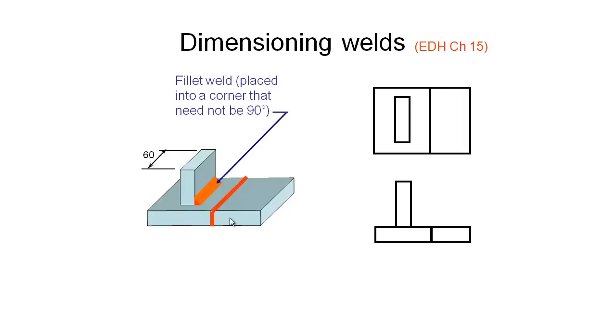The first weld we're going to look at is this fillet weld, a triangular shaped weld placed into this corner. This one's at 90 degrees, they can be at other angles but this is most common. For this example, let's say this piece of steel is 60mm in length. How would we indicate this particular fillet weld? Here's one way to do it, and we're going to show you a few options. We have our arrow on our leader pointing to where the weld is occurring in the intersection between these two plates.